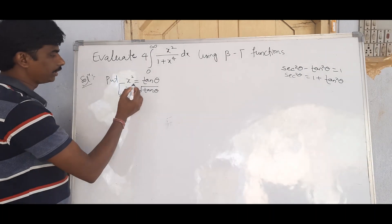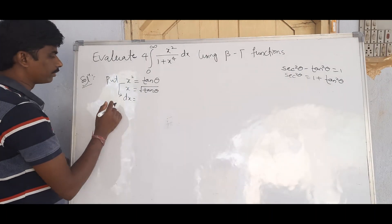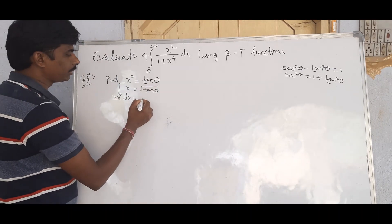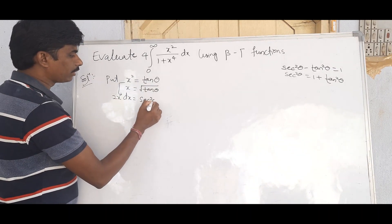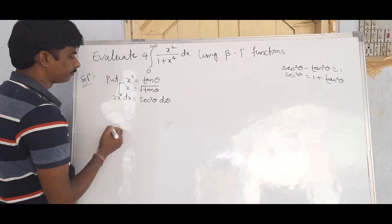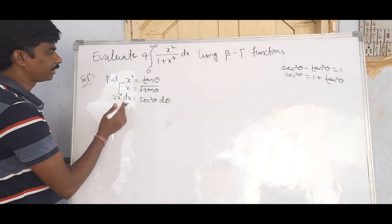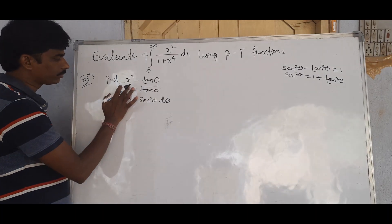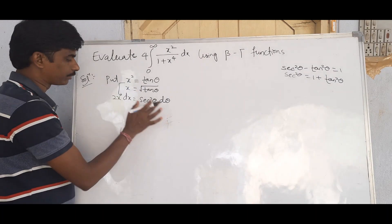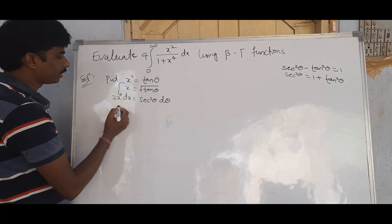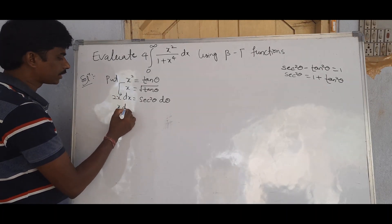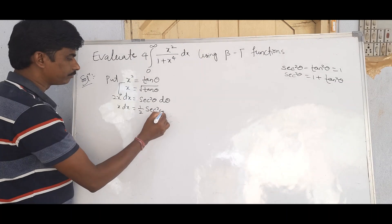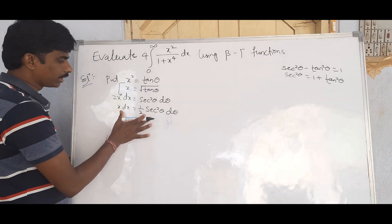So 2x dx = sec² θ dθ, which gives x dx = (1/2) sec² θ dθ.